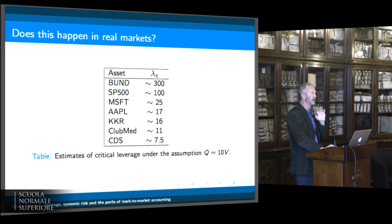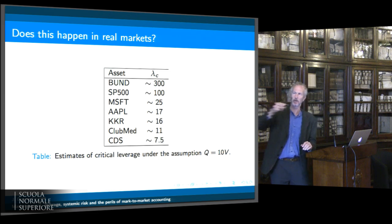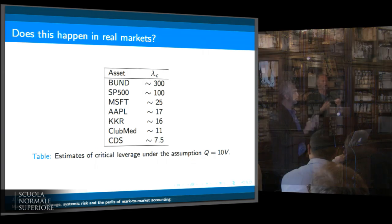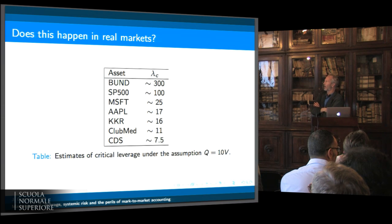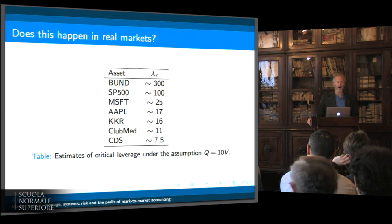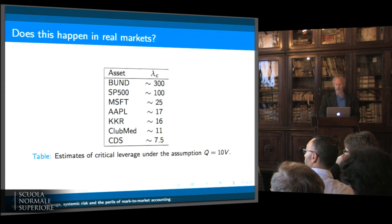Does this ever happen in real markets? Is this just a mathematical quirk, or are there actors who have actually done this to themselves? We tried to calculate, under the assumption of a position equal to 10 times daily volume, the critical leverage — that is, the leverage where leverage goes to infinity on an exit — for different assets. For something like the Bund or the S&P 500, that critical leverage is very high. But on something like Club Med stock or CDS, it's quite low — a leverage of 7.5 is not that high by investment banking standards. So I think it's quite possible that during the crisis, people have actually driven themselves bankrupt simply by their own leverage.